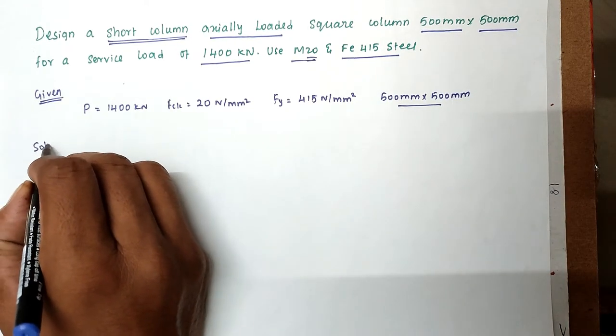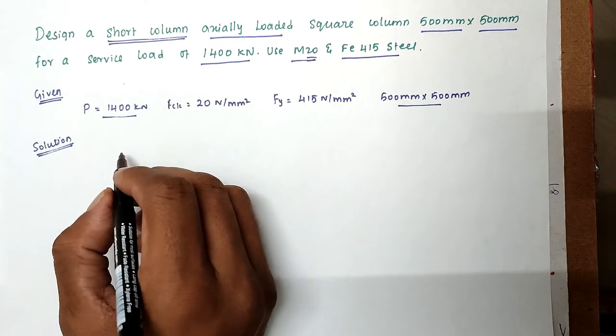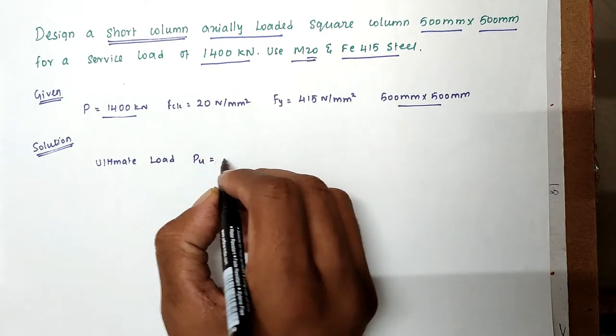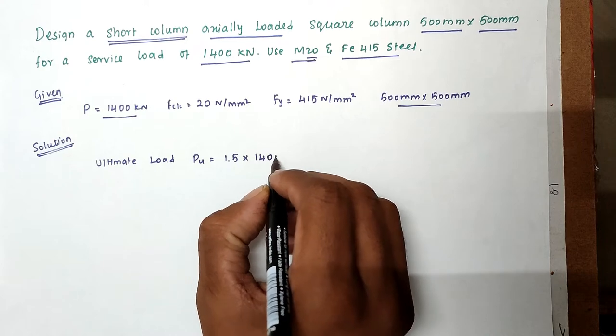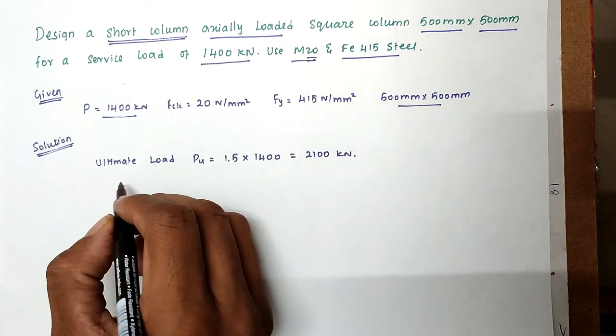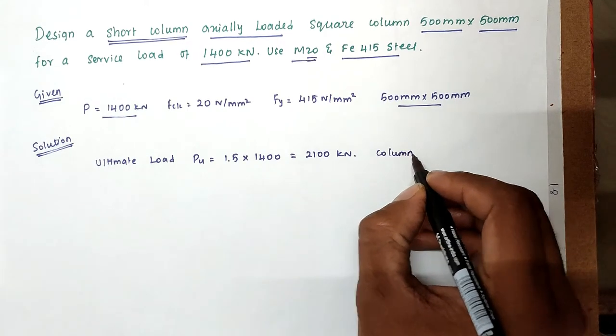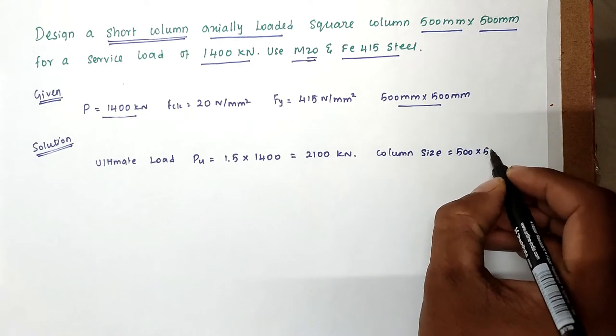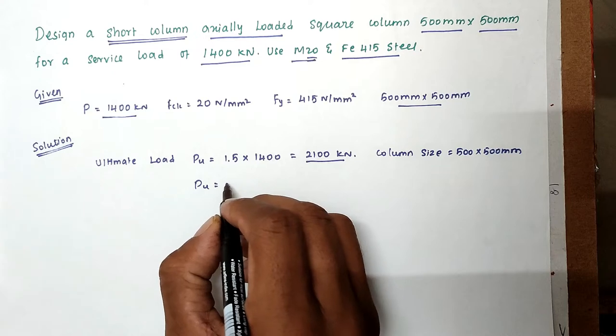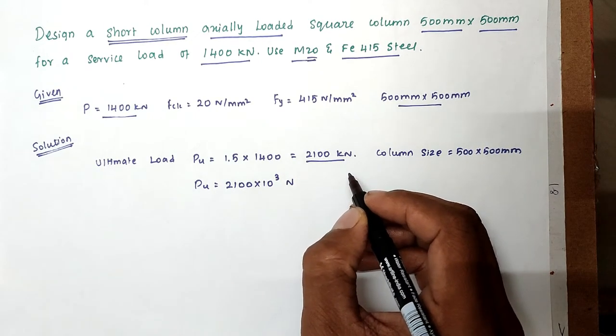So first the load P equal to 1400 kN. Then FCK equal to 20 N per mm square, that is given M20 grade concrete. Then FY equal to 415 N per mm square. And size 500mm into 500mm. Now we can take the ultimate load. So ultimate load PU equal to 1.5 into 1400. So the 1.5 is factor of safety, equal to the value will be 2100 kN.